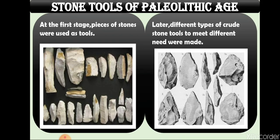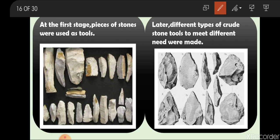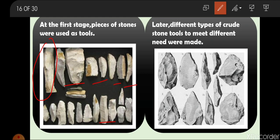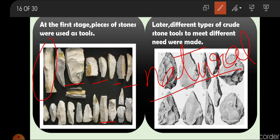Stone tools of the Paleolithic Age: initially, early humans did not know that crushing two stones together would break them, so they searched for and used natural stones in their crude natural form without changing their shape. They searched for the type of stone they needed and used it according to their needs. Later, they started using crude stone tools in natural form to meet different needs.